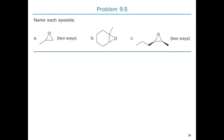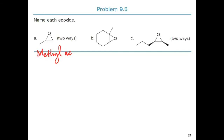Practice problem 5: name each epoxide. For the first one, naming as an oxyrane: the ring has one methyl substituent, so no number is needed — it's methyl oxyrane. Naming as an epoxy alkane: the longest chain has 3 carbons (propane), and the oxygen is bonded to carbons 1 and 2, giving 1,2-epoxypropane.